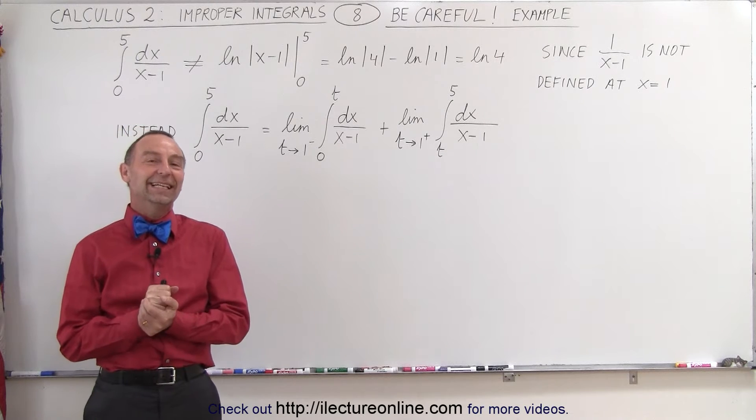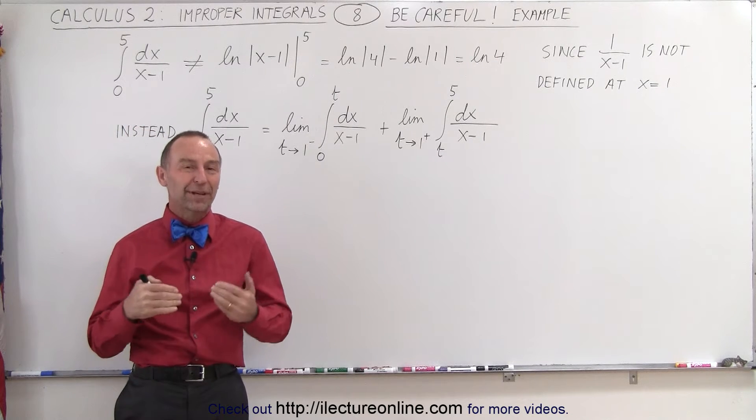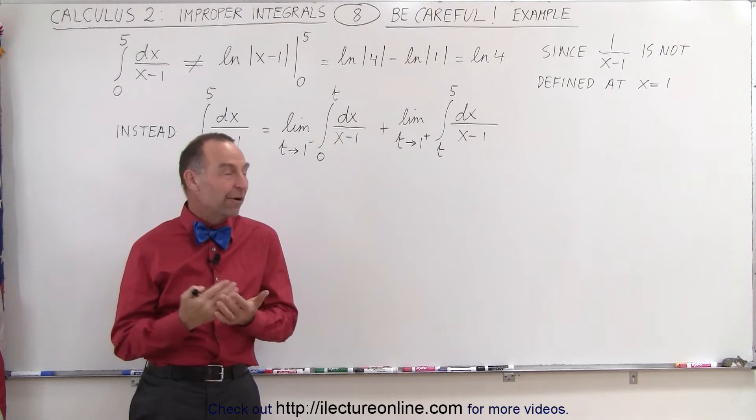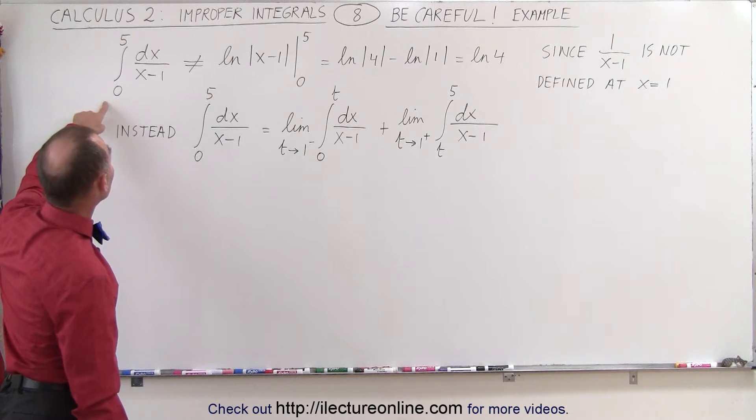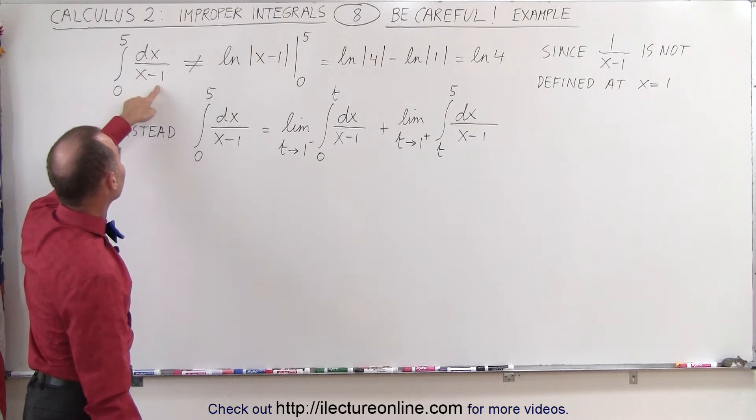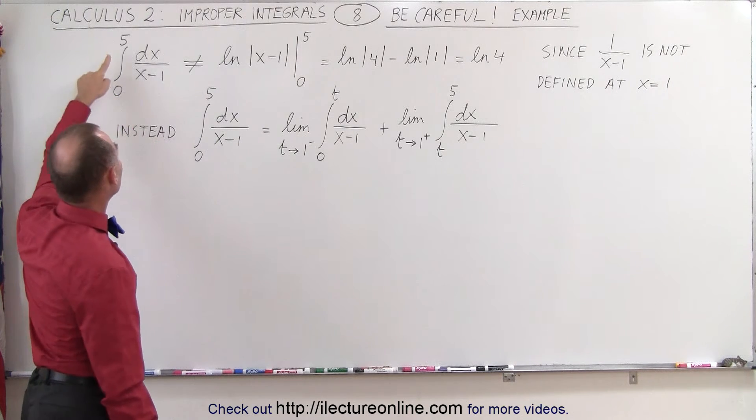Welcome to Electronline. Now let's take a look at an improper integral that may not be obvious right off the bat when you look at it. For example, here we have the integral of dx over x minus 1 with limits from 0 to 5.